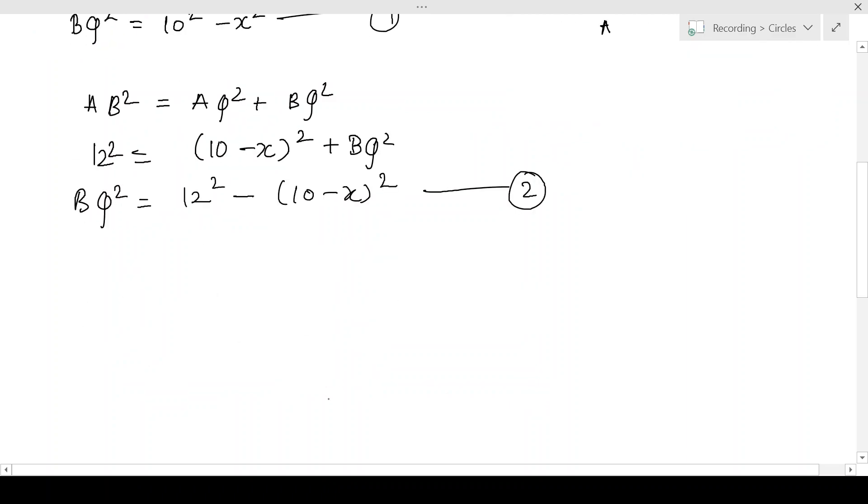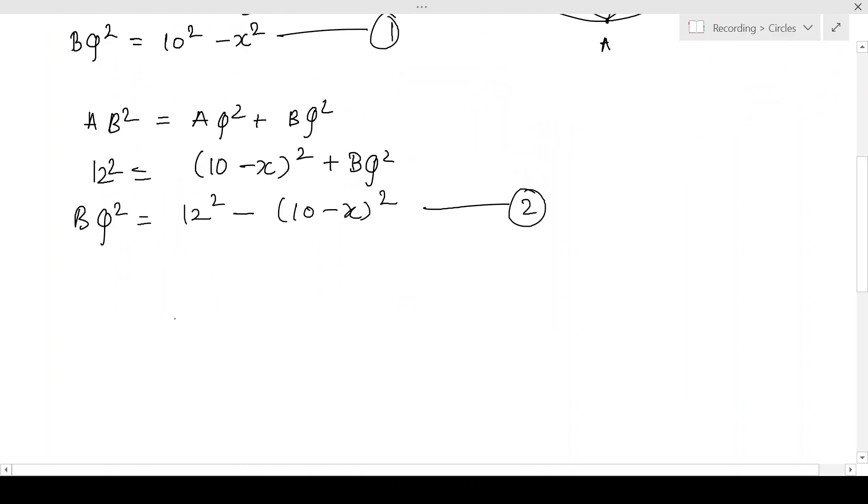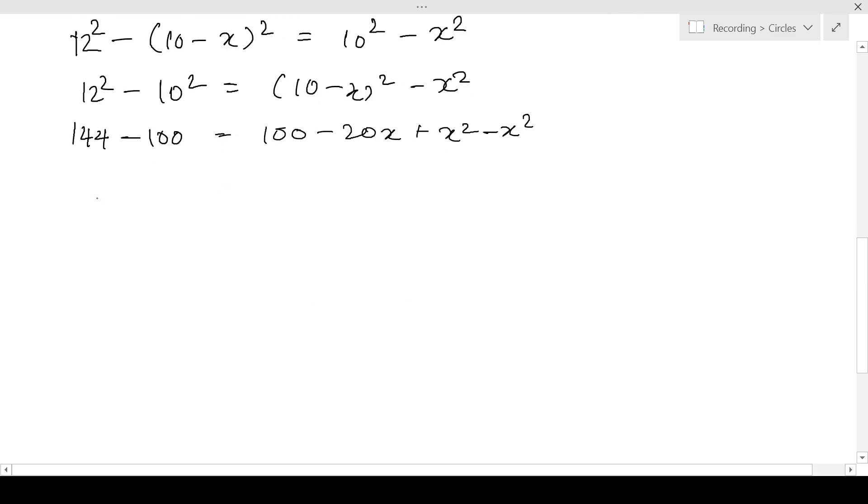So now both of them are equal to BQ square, so we can make them equal. That gives us 12 square minus 10 minus X whole square is equal to 10 square minus X square. So now let's solve this: 144 minus 100 is equal to 100 minus 20X plus X square minus X square. That gives us 44 is equal to 100 minus 20X.